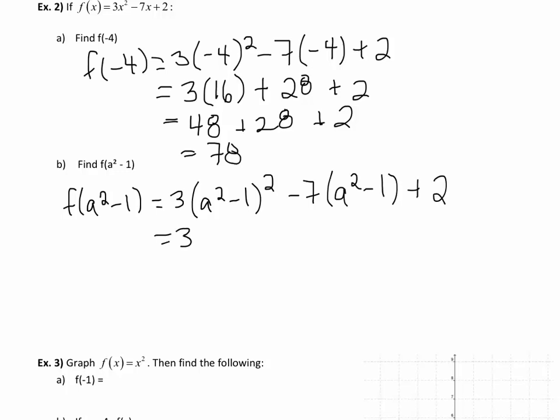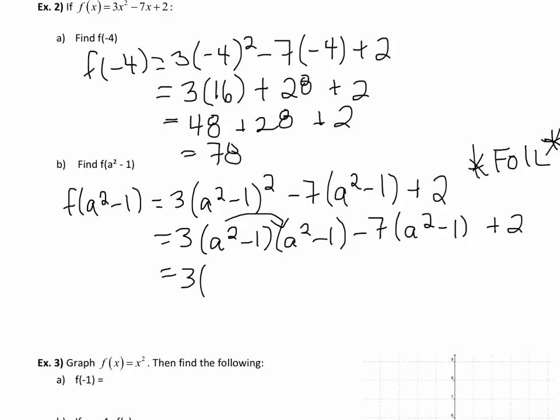We need to expand out our binomial here. So if you remember how to do it, I'll just write it out, expand it out a little bit so that we can refresh our memories. But remember we're going to need to FOIL here. First, outside, inside, last. So that's going to be 3 times: a squared times a squared is a to the 4. A squared times negative 1 is minus a squared. A squared times negative 1 again is minus a squared, minus 1 times minus 1 plus 1.